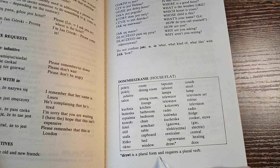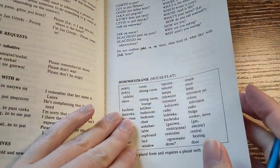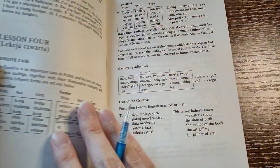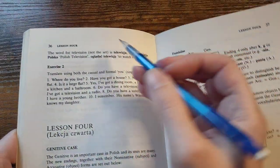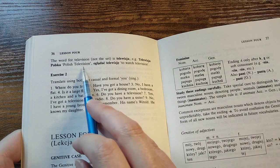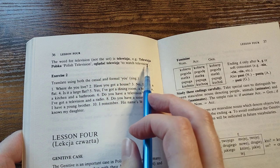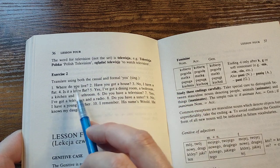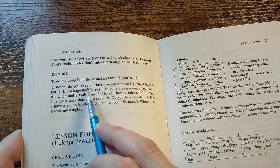Drzwi is a plural form and requires a plural verb. The word for television is Telewizja. Telewizja Polska. Polish television. Or Grand Dutch Telewizja. To watch television. Translate both the casual and formal you. Where do you live?